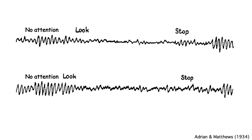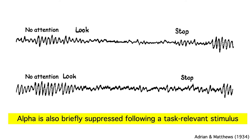More modern research has shown that if subjects are doing a task with a stimulus every couple of seconds, you'll see alpha during the period between the stimuli. And then the alpha is briefly suppressed when the stimulus appears and the subject has to respond. It's as if the appearance of the stimulus causes the subject to start paying attention again, but once the stimulus has gone and the subject has responded, attention is no longer necessary.